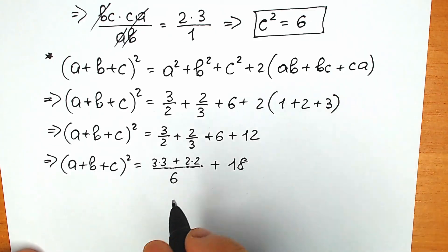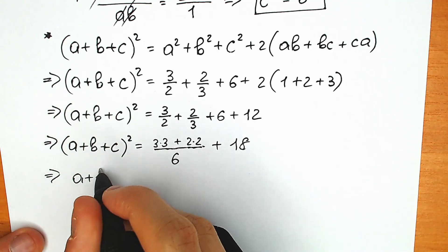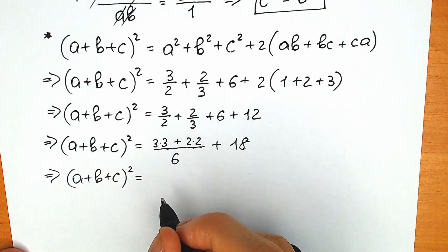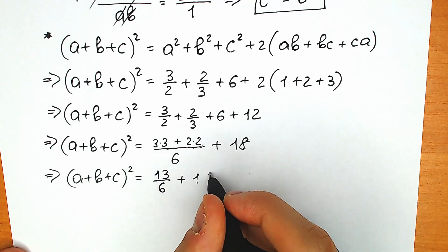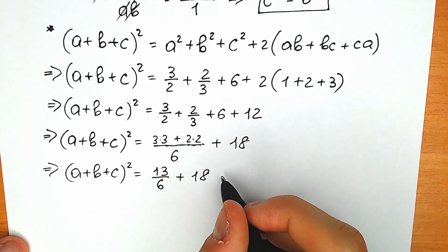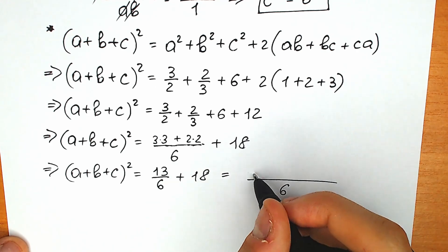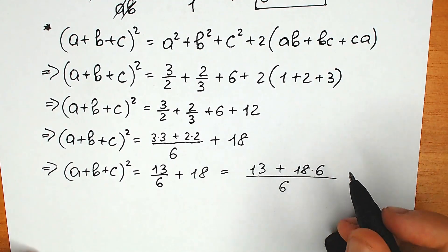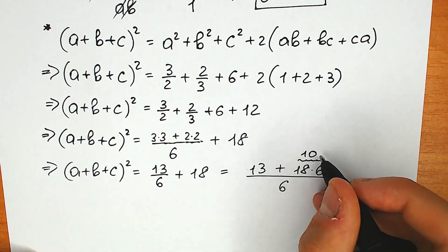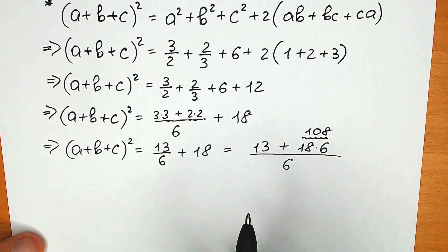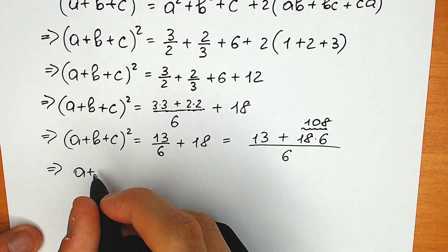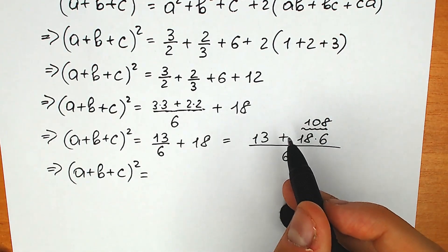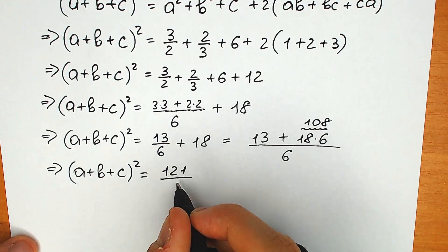So (a plus b plus c) squared equals 9 plus 4 over 6, which is 13/6, plus 18. Finding the common denominator: 13 over 6 plus 18 times 6 over 6 equals 13 plus 108 over 6 equals 121 over 6. So (a plus b plus c) squared equals 121/6.